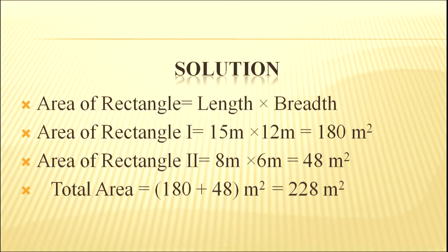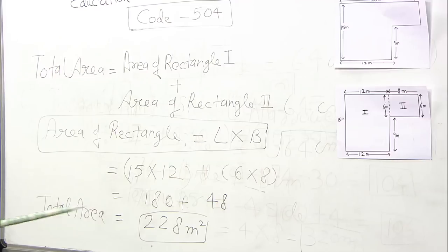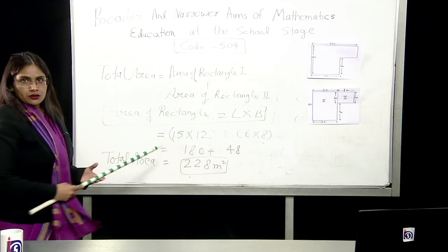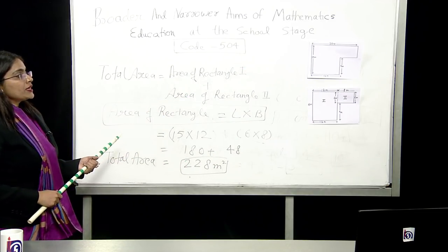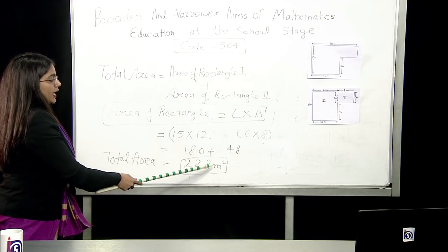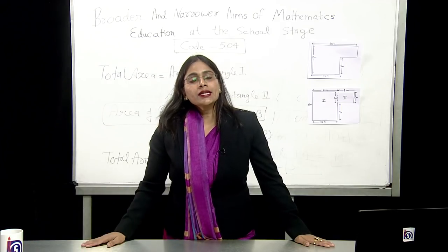So the total area is area of first rectangle plus area of second rectangle. Area of rectangle, the formula is length into breadth. For first rectangle, dimension is 15 into 12 and for the second is 6 into 8. 15 into 12 makes 180 plus 48. So, the total is 228 meter square. Unit of area is square unit. So, here, measurement unit is meter. So, that makes 228 meter square.